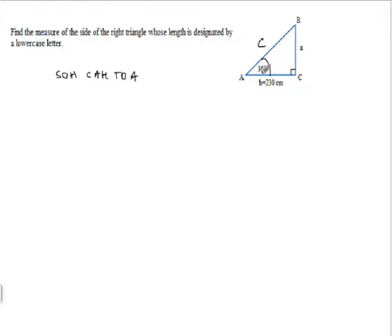So, we can write our equation. The tangent of 36 degrees is equal to the opposite side, A, over the adjacent side of 230.